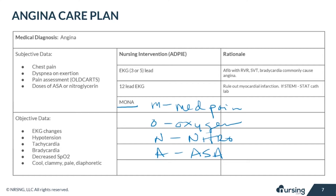M used to stand for morphine if both aspirin and nitroglycerin did not relieve chest pain, but morphine isn't really used anymore as it increases mortality. So for the M in MONA, think medicine because some type of medication will be given for pain. Oxygen reminds you to check your oxygenation for chest pain. If the patient is short of breath or has a SAT of less than 94%, start two liters nasal cannula. Only use or administer oxygen if it is clinically necessary.